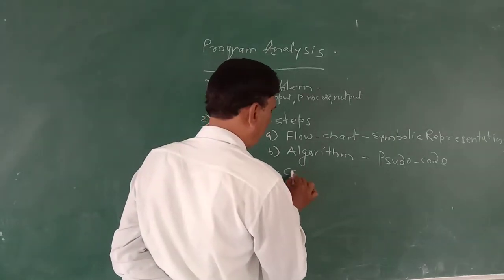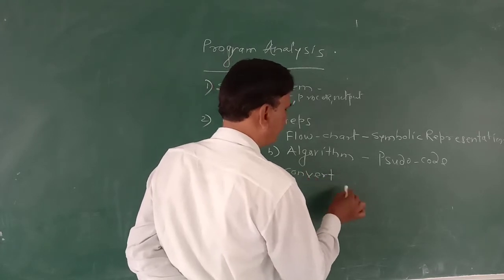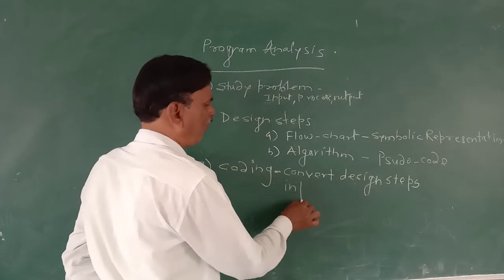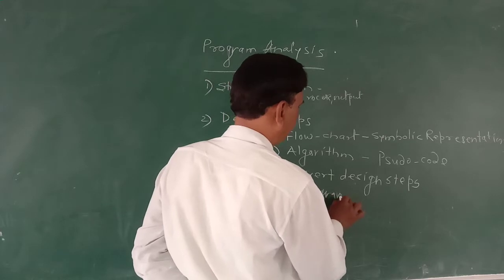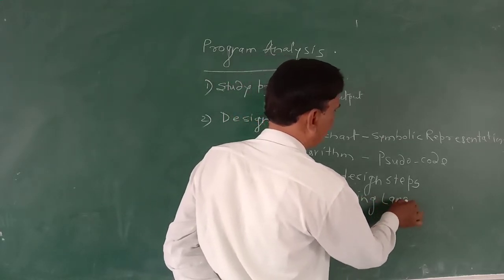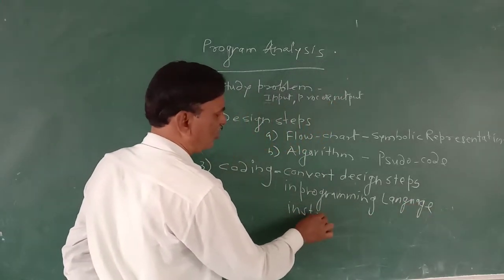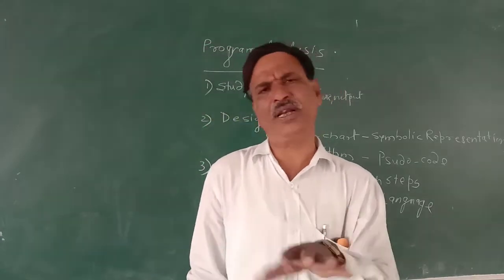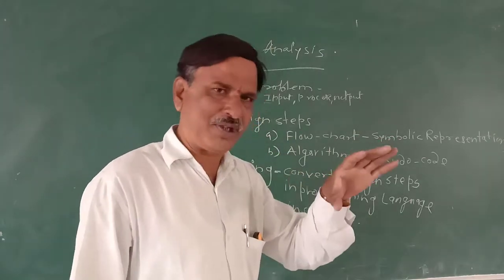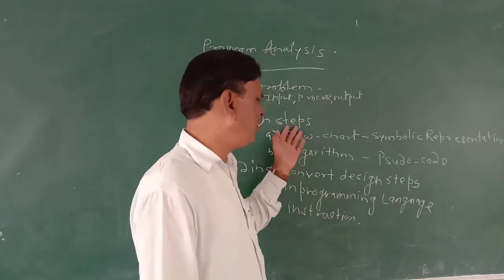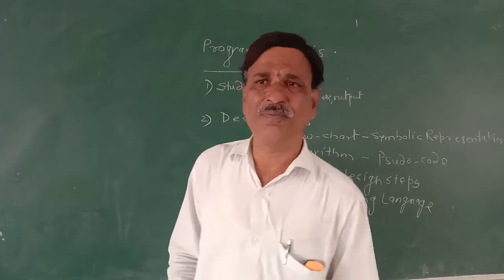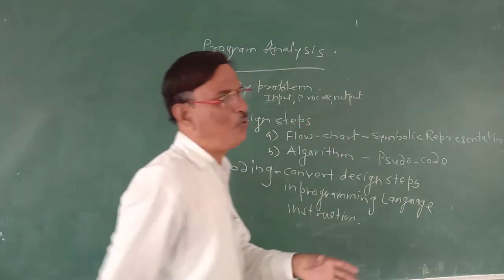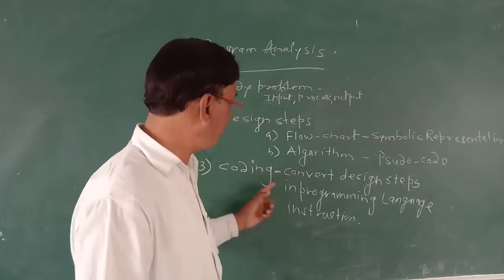Those steps are to be converted into programming language instructions. That step is called coding. In this step, we convert design steps into programming language instructions. We can ask: which programming language? Any programming language will do, because we have written the steps in our simplest form. If the programming language is C++, then every step of the flowchart or pseudocode will be converted into C++ programming language instructions.